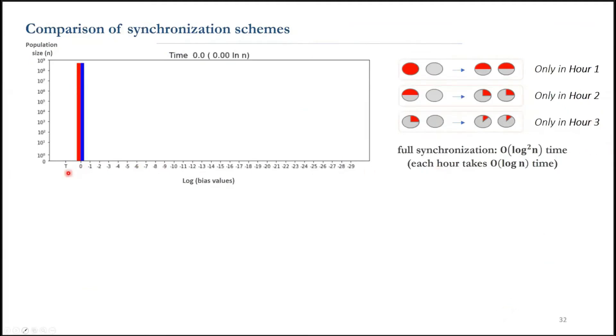We can look more closely at the simulation of the fully synchronized protocol that I described. This is a simulation of 10 to the 9 agents with majority of red. T shows the neutral. The x-axis shows log of the bias values, and we start with an almost equal amount of each vote and see how it goes.